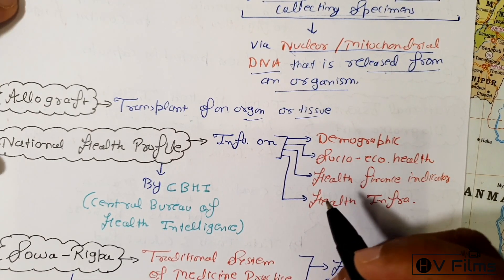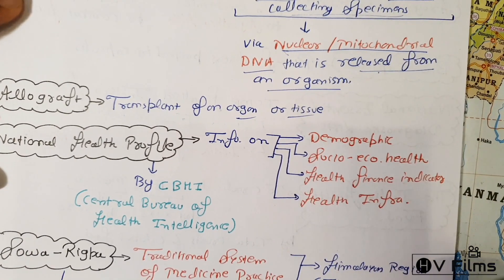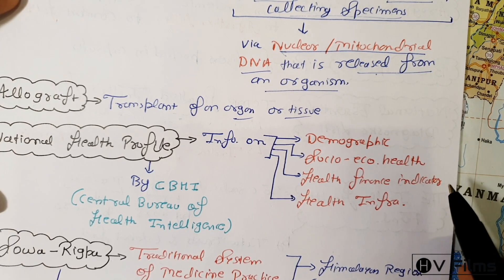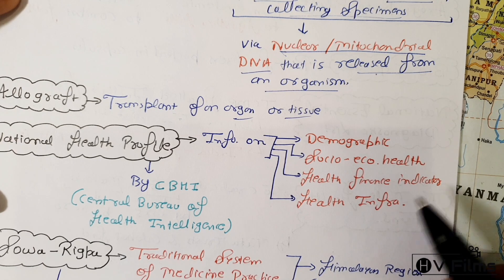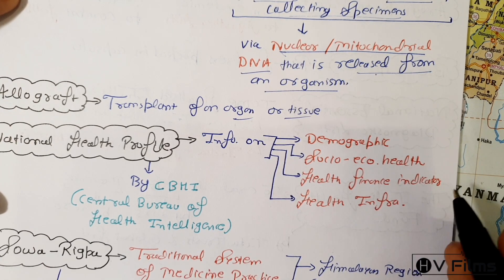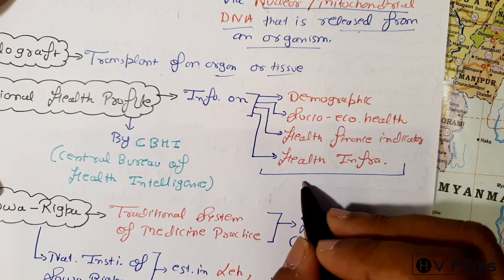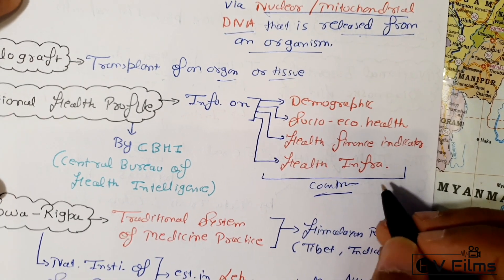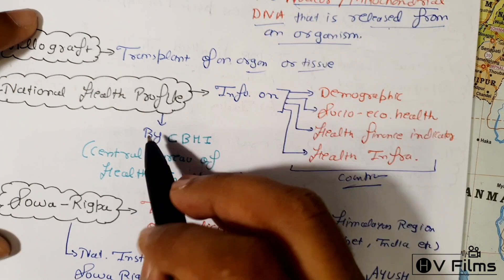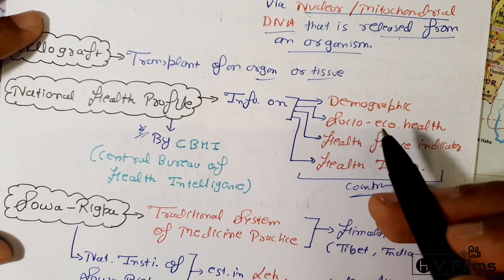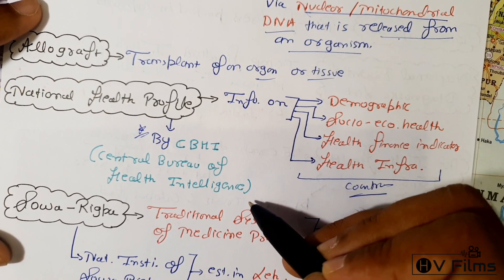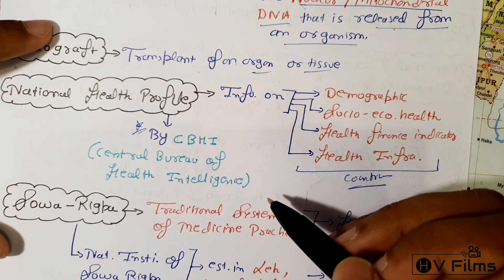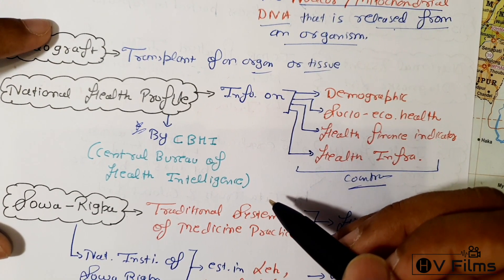The National Health Profile covers comprehensive information on demographic, socioeconomic, health status, health finance, health infrastructure, and human resource indicators in the country — essentially a report card of the nation's health. It is released by the Central Bureau of Health Intelligence (CBHI), which is under the Directorate General of Health Services (DGHS).